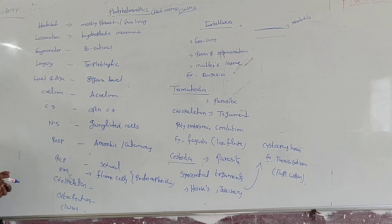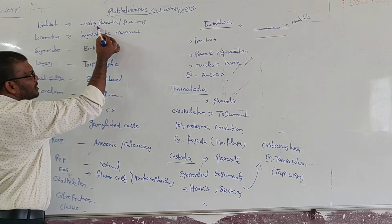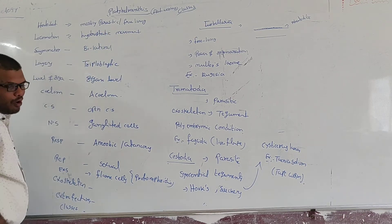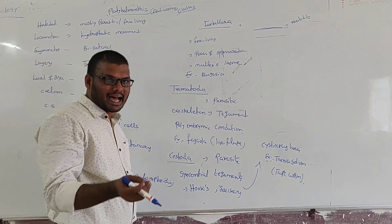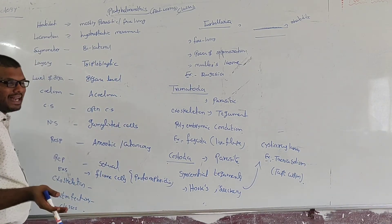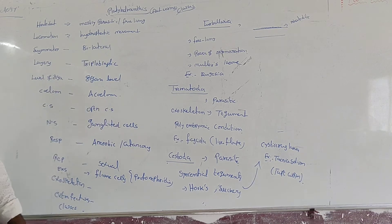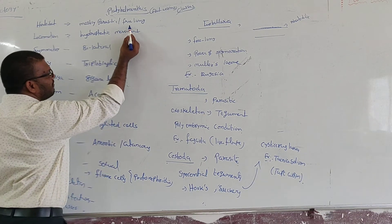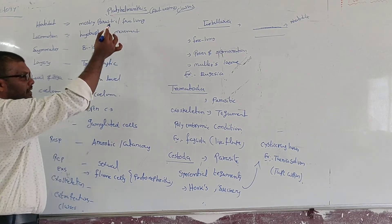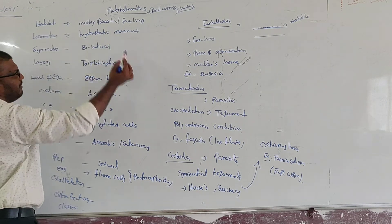Now we can go for the habitat, where the organism is living. These Platyhelminthes are mostly parasitic in nature. The organism that depends upon another organism for food and shelter is called parasitic nature. Some organisms are free-living. So in Platyhelminthes, some show parasitic nature and some show free-living nature.